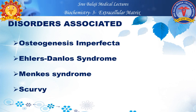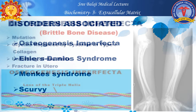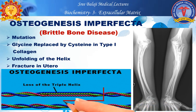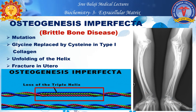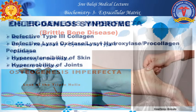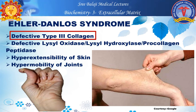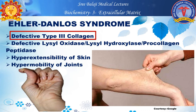Osteogenesis imperfecta is due to a mutation where glycine is replaced by cysteine in type 1 collagen, causing unfolding of the helix. This leads to bone fractures, even in utero, and is also known as brittle bone disease. Ehlers-Danlos syndrome is due to defective type 3 collagen, defective lysyl oxidase or lysyl hydroxylase, and procollagen peptidase. Features include hyper-extensibility of the skin and hypermobility of the joints.